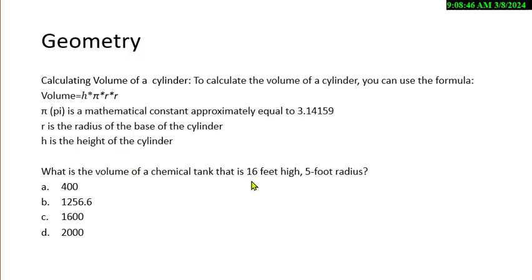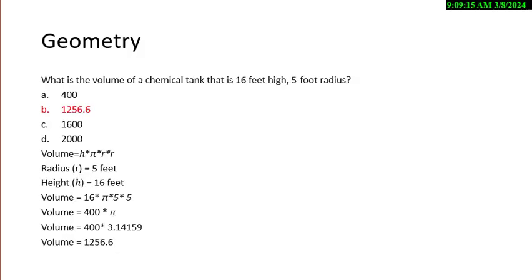And the volume of a chemical tank, that's 16 feet high, 5 foot radius, you have to calculate. Is it 400, 1,256, 1,600, or 2,000? It's going to be 1,256.6 cubic feet. So our height is 16 feet, our pi is 3.14, our radius is 5, times 5. So we're going to have 16 times pi, times 5, times 5. So that number equals 400 times pi, 400 times 3.14 is 1256.6. Not so bad. This takes practice.